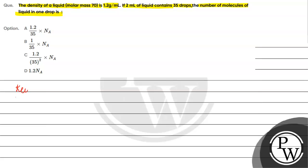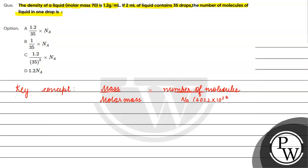The key concept for this question is: mass divided by molecular mass equals number of moles, and molar mass is basically equal to number of molecules divided by Avogadro's number, which is 6.022 × 10²³ mol⁻¹.